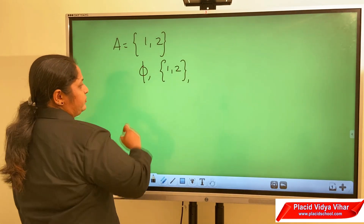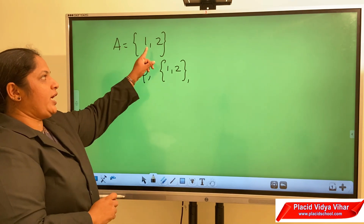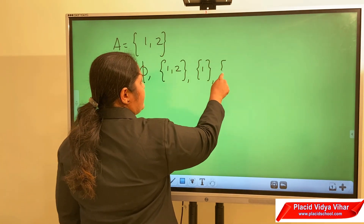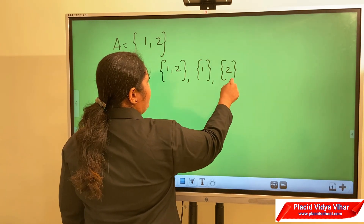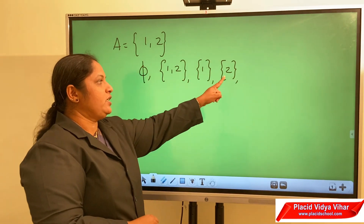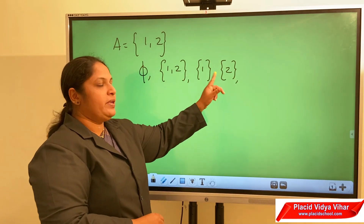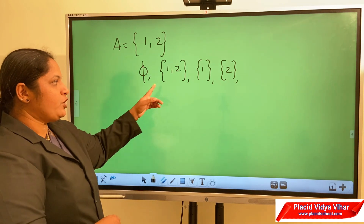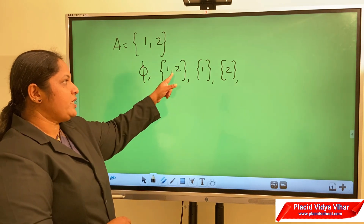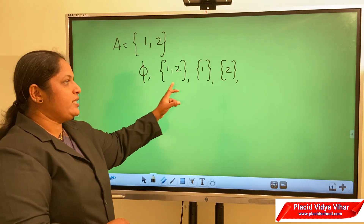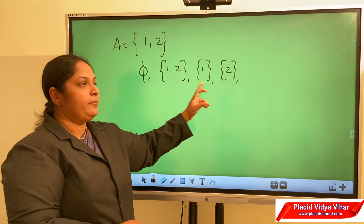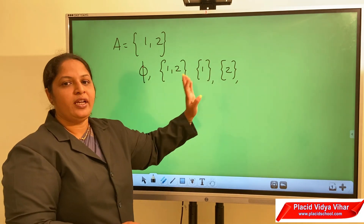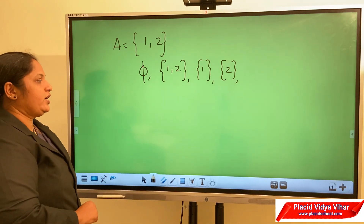Let this be set {1, 2}. Write null set first, then the set itself {1,2}, then individual elements: {1} and {2}, and then combinations of 2 — which is already the set itself. So for this set, there are 1, 2, 3, and 4 subsets in total.